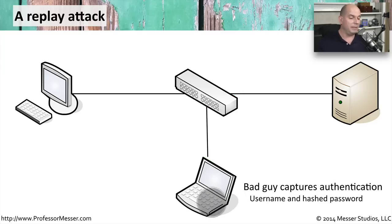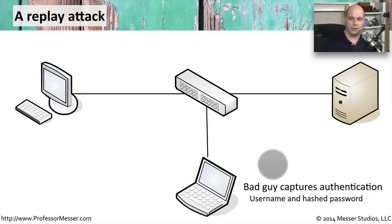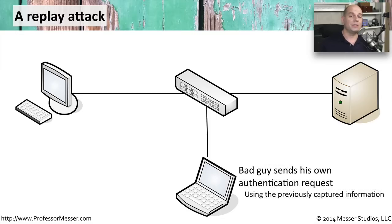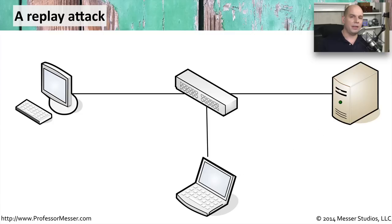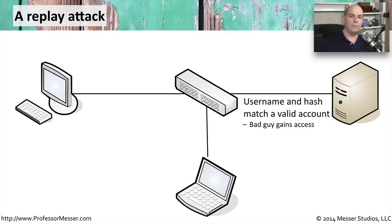A copy of that has now been sent to the bad guy, so he's captured that authentication process — that's probably going to be my username sent in the clear and a hashed password. You don't generally see passwords being sent in the clear across the network any longer. Since the bad guy now has my username and my hashed password, he's going to attempt his own authentication request using that captured information. The server thinks that information came directly from me, so the bad guy gains access.